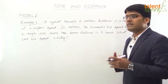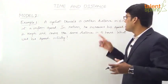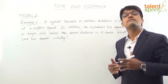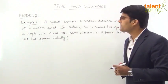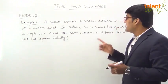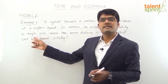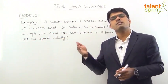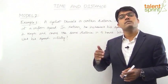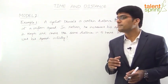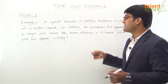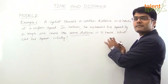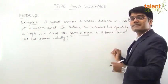A cyclist covers a distance in 6 hours at a uniform speed. In return journey, he increases his speed by 2 km per hour. The same distance is covered in 5 hours, which is less than the initial 6 hours.